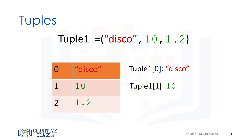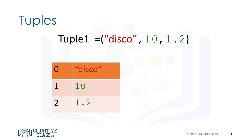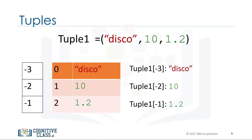We can access the second element as follows. We can also access the last element. In Python we can use negative index. The relationship is as follows, and the corresponding values are shown here.